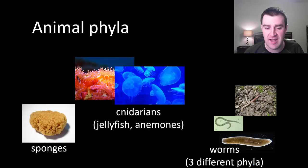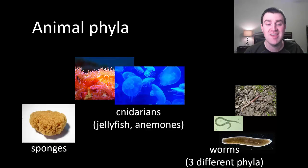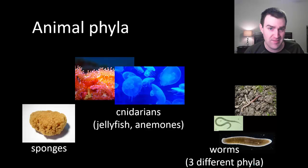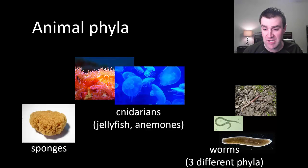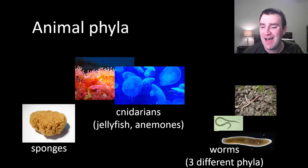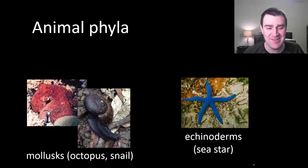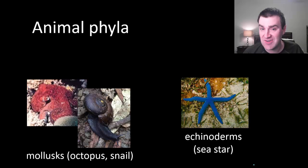First, a broad survey of different animal groups — I don't want you to memorize these, just to give you a sense that there are lots of different types of animals besides arthropods and vertebrates. There are sponges, cnidarians — a group that includes jellyfish, anemones, and coral — lots of different types of worms, which make up three different phyla, mollusks like octopi, snails, squids, and clams, and echinoderms like sea stars and sea urchins.